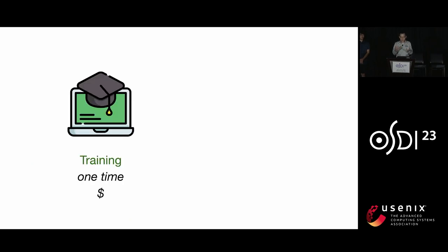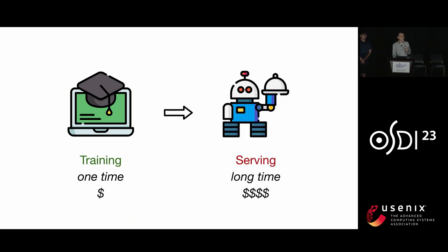Most previous works on model parallelism actually focus on deep learning training, and that's also why this session is called 'Train the Bits.' In this work, we are focusing on a different scenario: deep learning serving. Typically you only need to train your deep neural network once, but you need to deploy and serve that trained model for a long period of time, making the cost of serving actually higher than training.